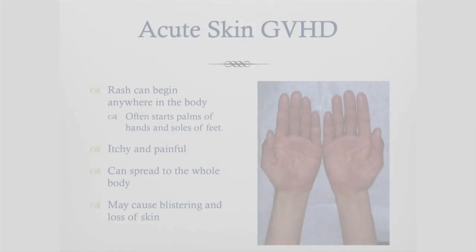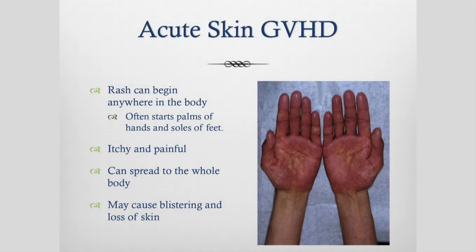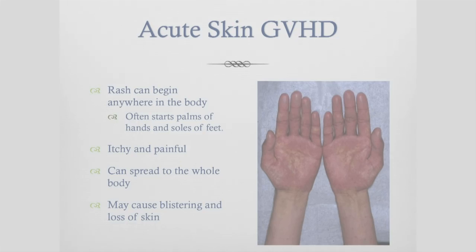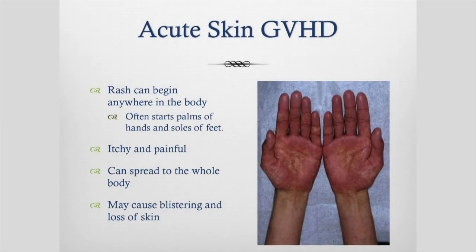Acute skin graft versus host disease usually presents as a rash, which can be anywhere on the body but often starts on the palms of the hands and soles of the feet. It's not very commonplace to get rashes on the palms, so this is something that is relatively distinctive. It can be itchy or painful or both at the same time, and it can spread to your whole body. In severe cases it may cause blistering of your skin and loss of the skin, just like a burns patient.